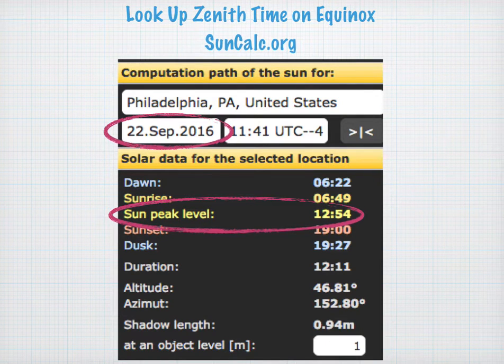You can use suncalc.org and enter your location and the date of the equinox. In Philadelphia, that date is the 22nd of September. The solar noon, or the zenith point, is called the sun peak level, and it is given as a time. So in this case, it is 12:54 in the afternoon for Philadelphia.